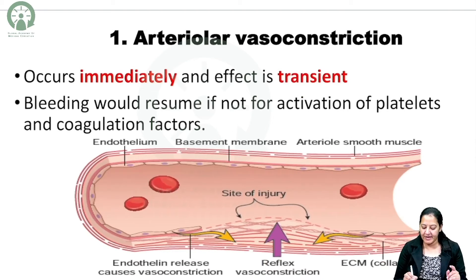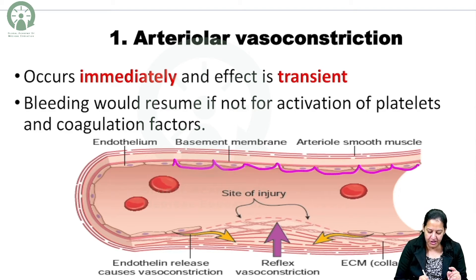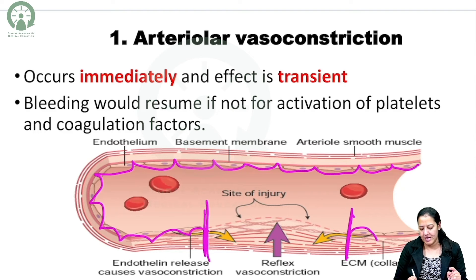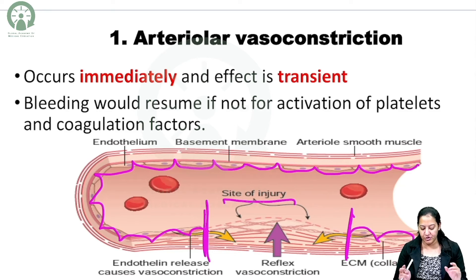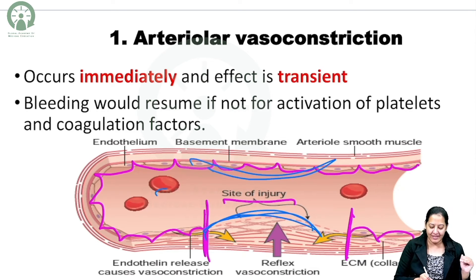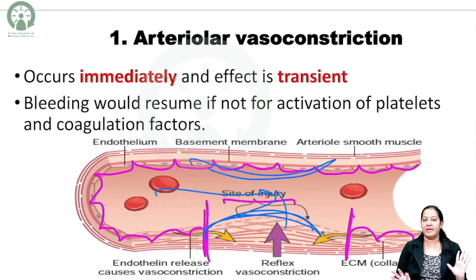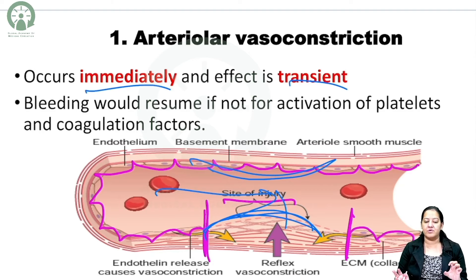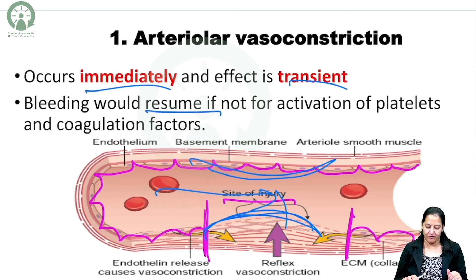In this diagram, you can see the blood vessel lined by endothelial cells. Appreciate the continuity of the endothelial cells everywhere. Here, the endothelial cell is discontinuous — this is the site of the injury. As soon as the person has the injury, that particular segment undergoes vasoconstriction, so less blood will be coming into this area and there are less chances of bleeding. This is a very immediate and transient effect — for the next few seconds only vasoconstriction is there, and after that it is not maintained. Bleeding will resume if the primary and secondary clot do not form. That is the first step.